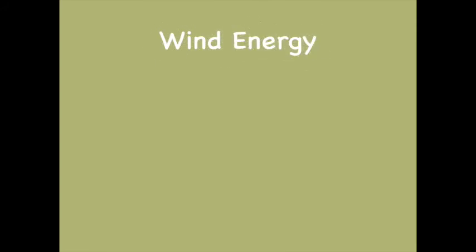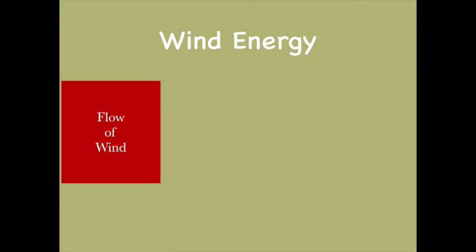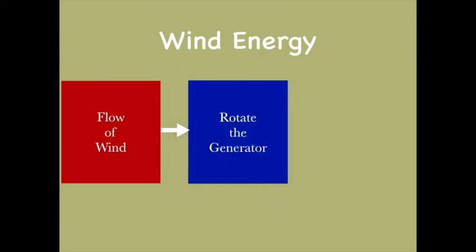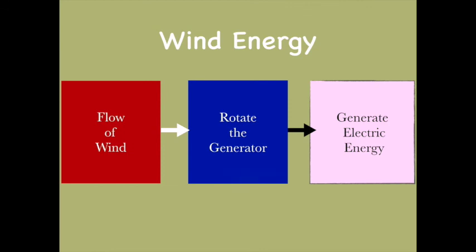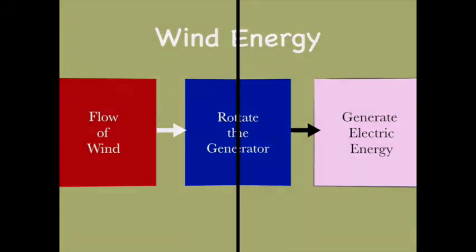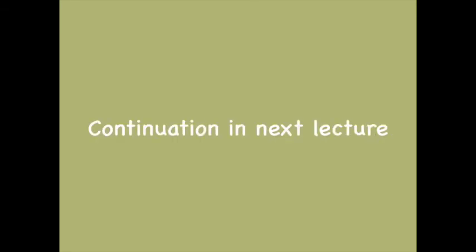For wind energy, a well-flowing wind rotates the turbine of a windmill, and as the turbine rotates, electrical energy is generated. Notice that in each case — thermal, hydro, bio, and wind — we are generating only electrical energy. Why do we always generate electrical energy? To know that, we have to wait for the next lecture. Thank you for watching.